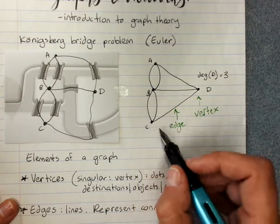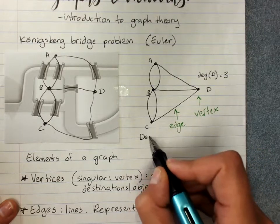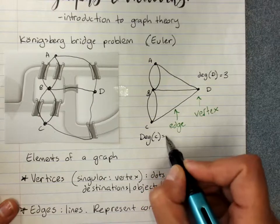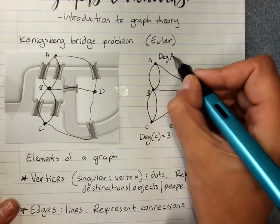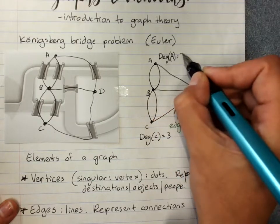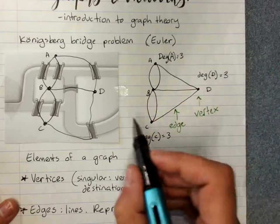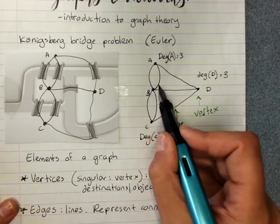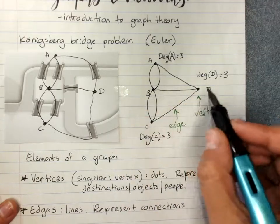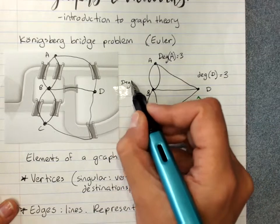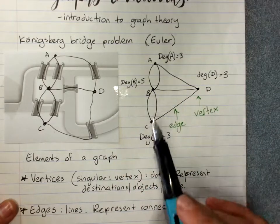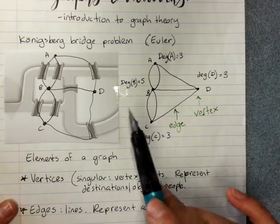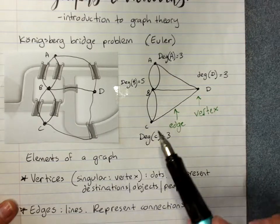So if we check this, the degree of C is three. The degree of A is three. And B, I've got one, two, three, four, five. I'm running out of space. So the degree of B is five. So all four vertices in the Konigsberg bridge problem are odd.